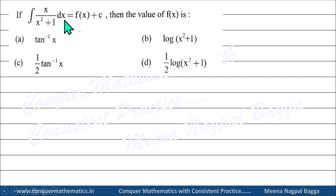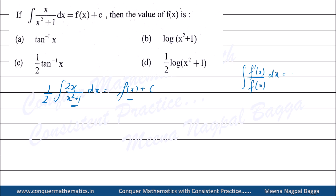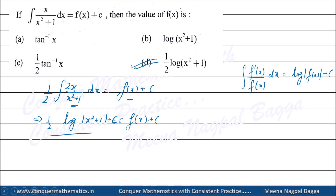Next: Integral of x/(x²+1) = F(x) + C, find F(x). Multiply and divide by 2: (1/2) × 2x/(x²+1). Now derivative of denominator (x²+1) is 2x which is in numerator - use result: when derivative is in numerator and function in denominator, integral = log of denominator. So F(x) = (1/2) log(x²+1). C is the constant of integration.